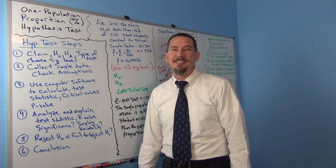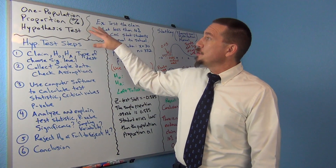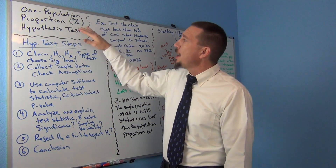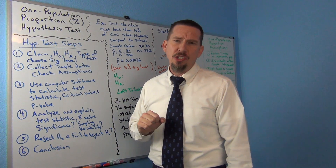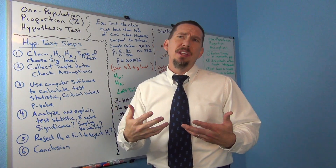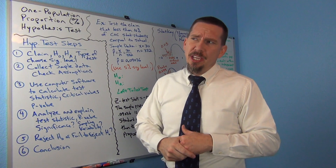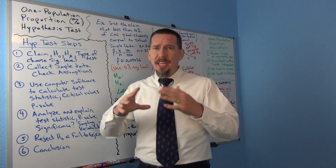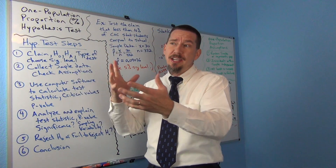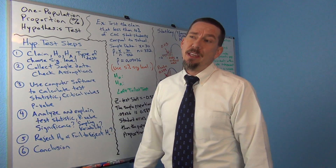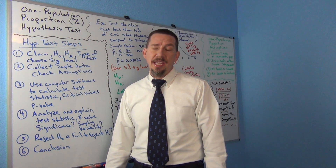That's the key for today. We're going to start with one of the most basic hypothesis tests: the one population proportion hypothesis test. This is usually when you're trying to figure out a population percentage — maybe we think a population percentage might be something and we're trying to see if that claim holds up compared to sample data.